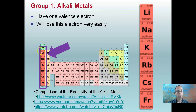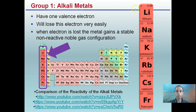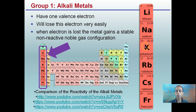These alkali metals have one valence electron. They will lose an electron very easily, and when an electron is lost, the metal gains a stable, non-reactive, noble gas electron configuration. For right now, just note that they tend to lose an electron — so lithium tends to have a +1 charge, as does rubidium, as does francium, as does potassium. All of these are group 1 alkali metals.